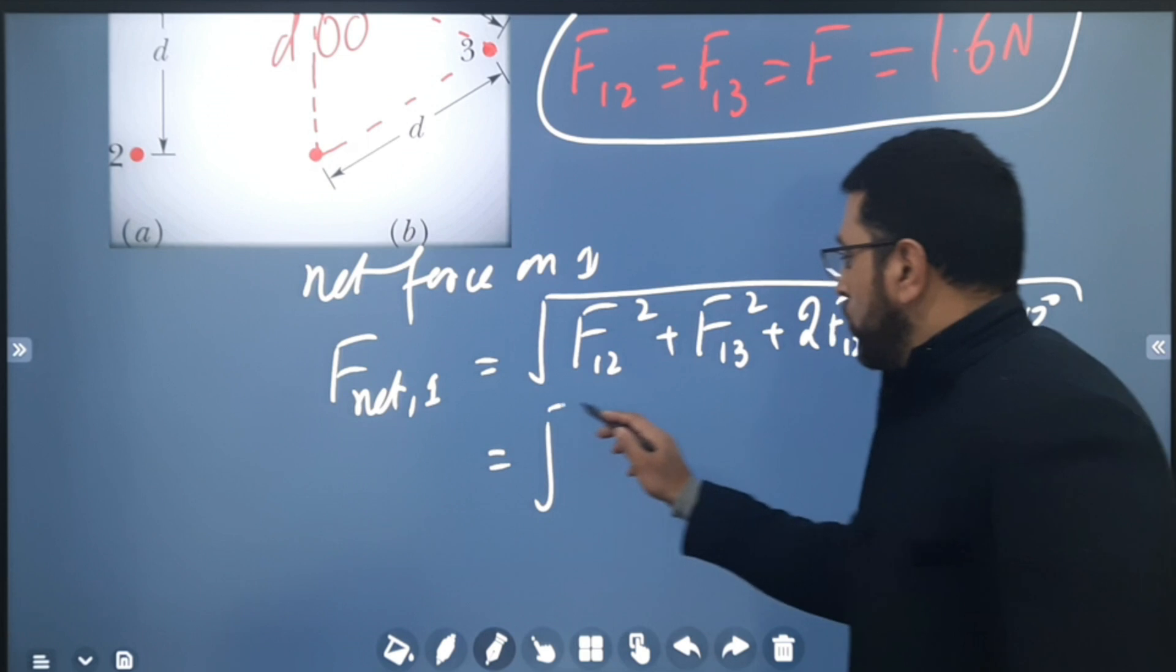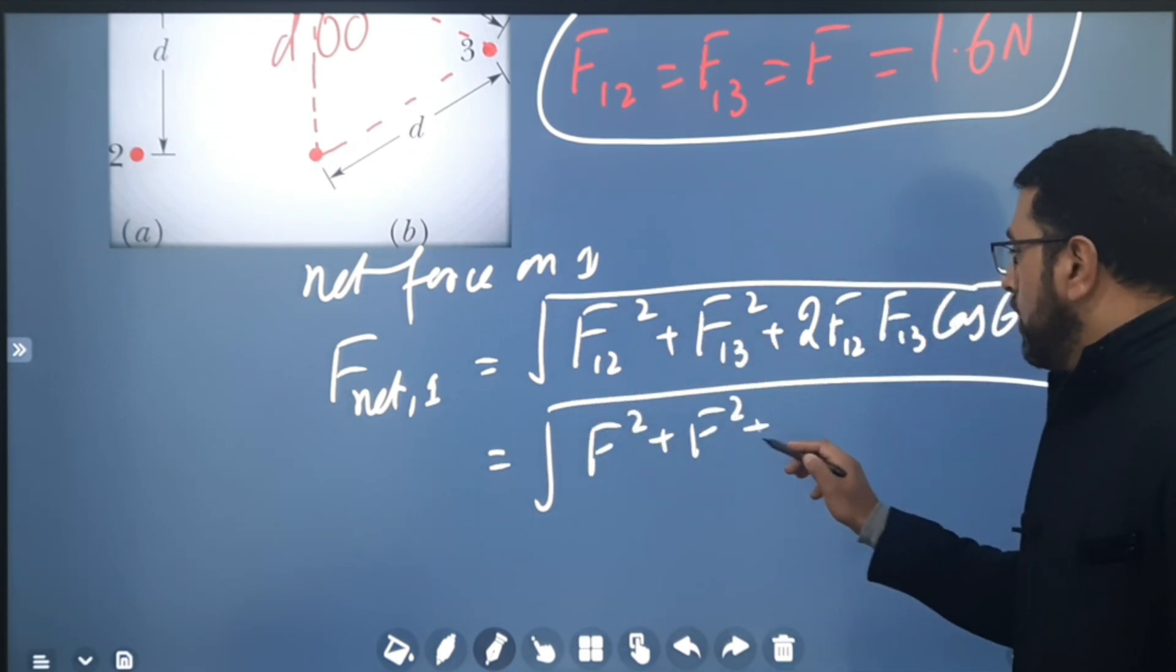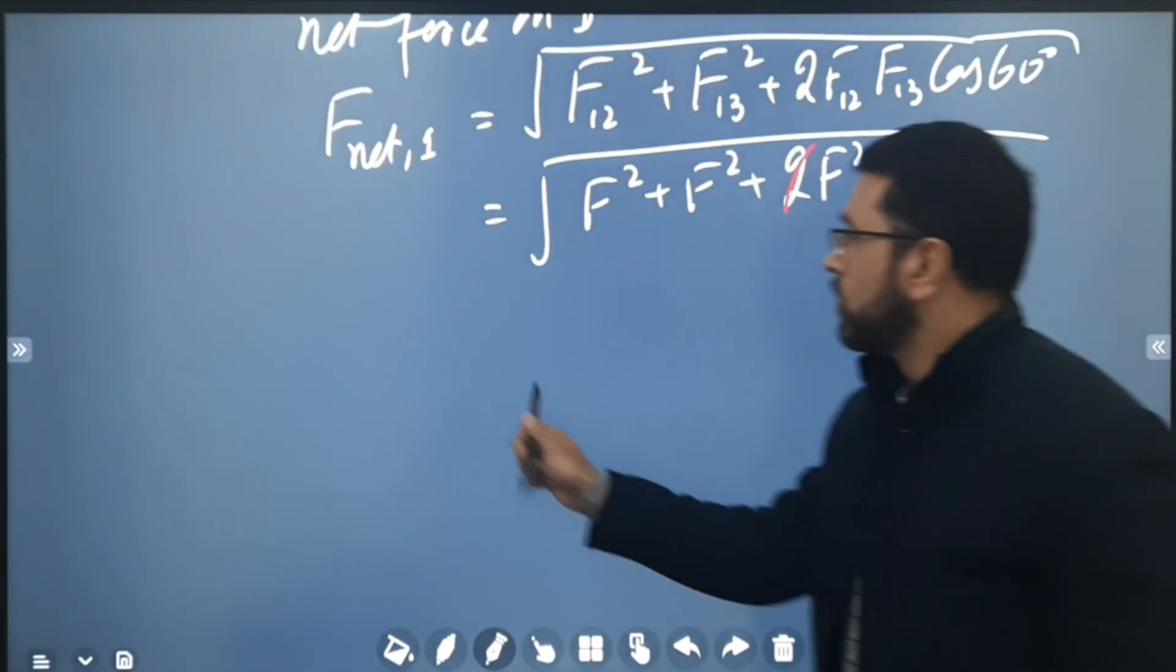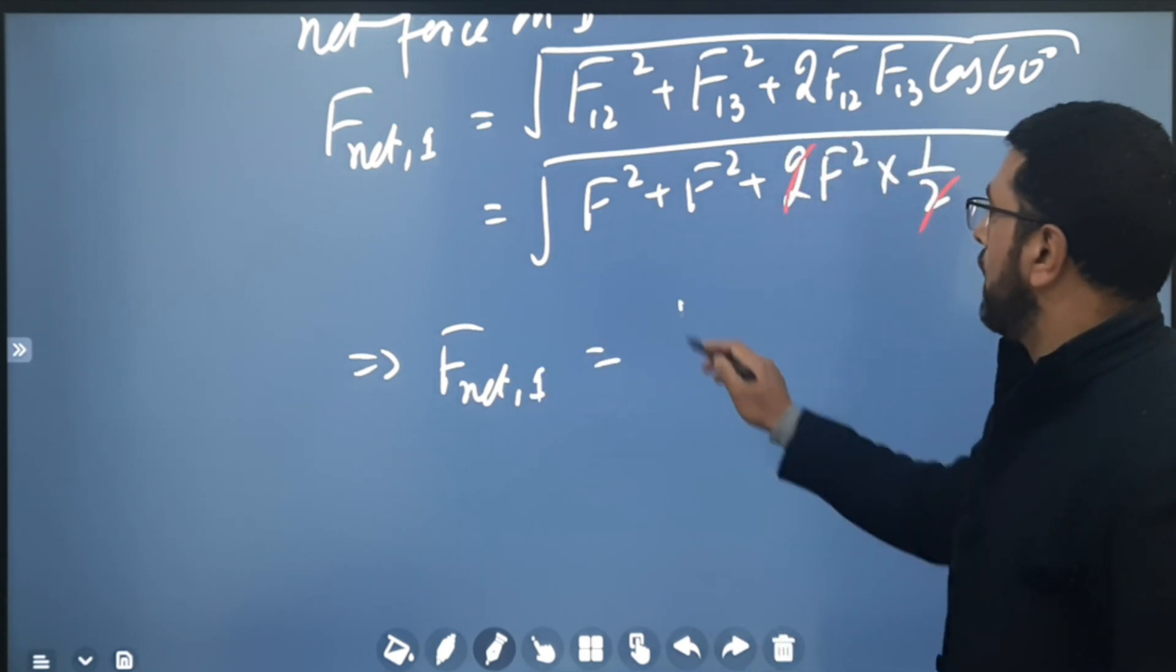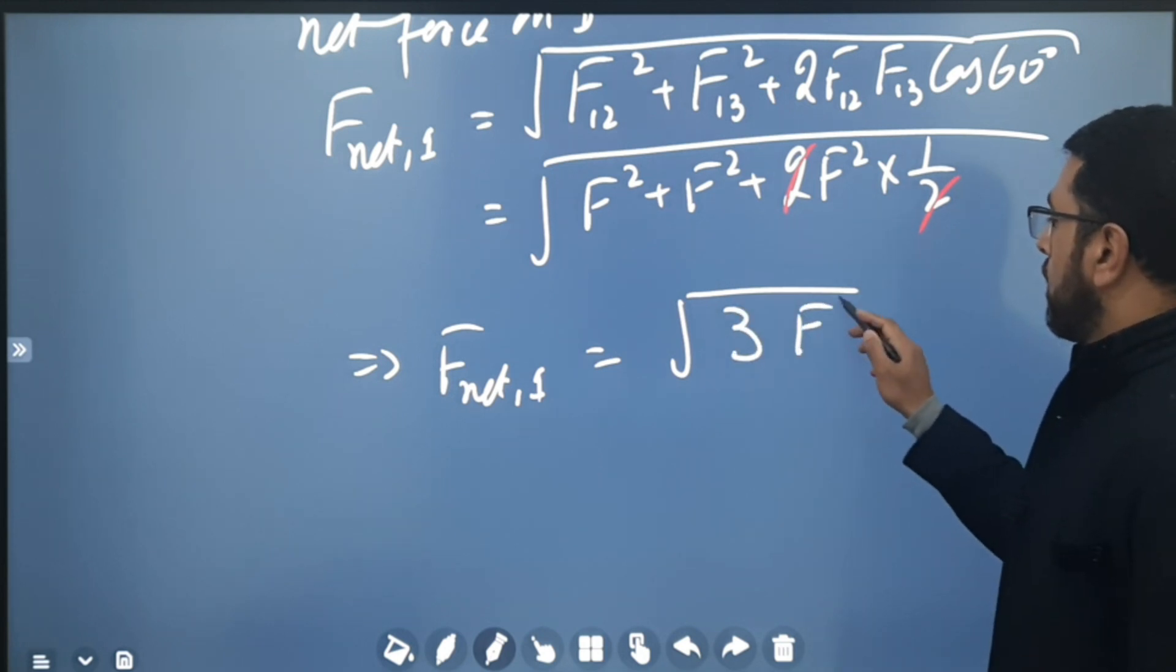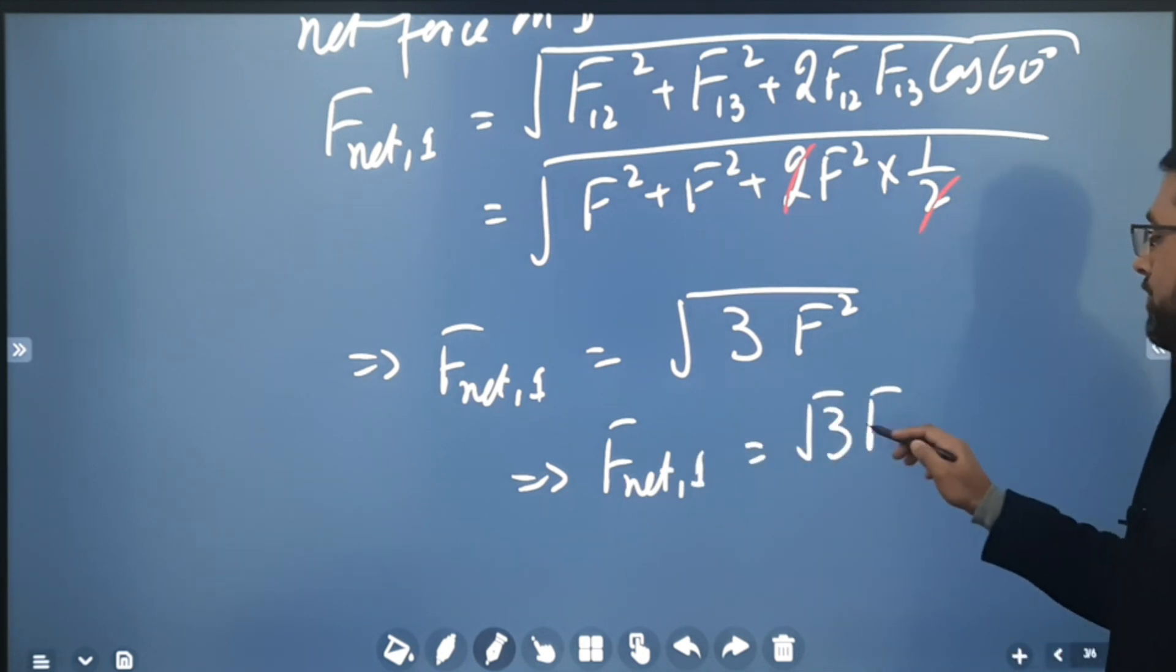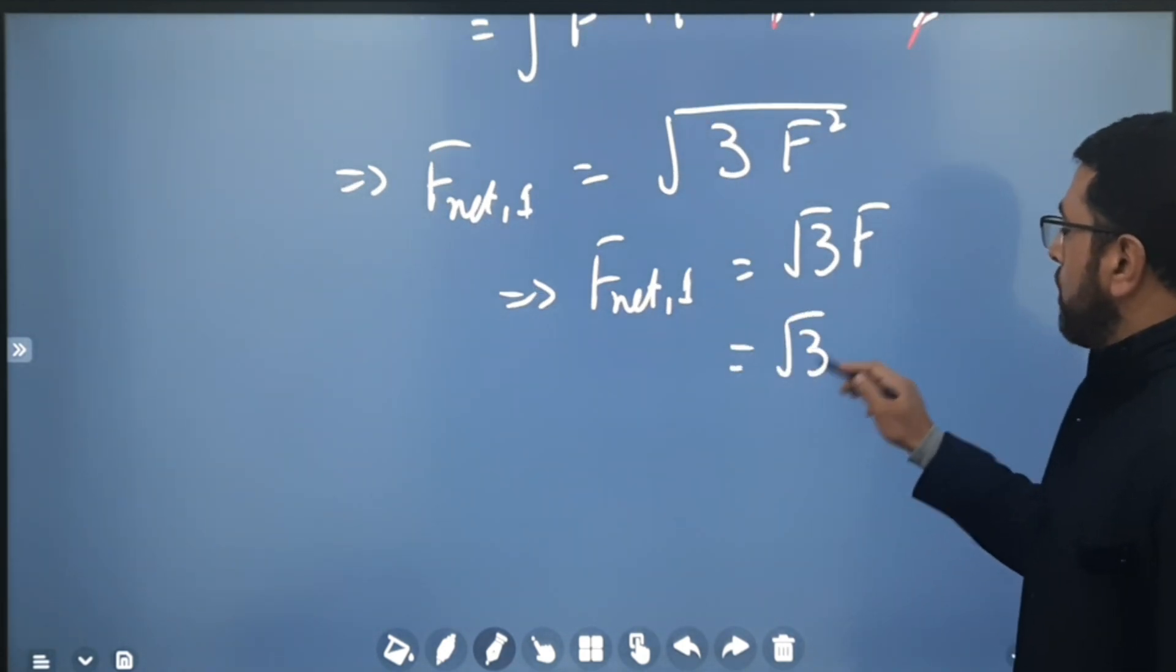This is equal to √(F² + F² + 2F·F·cos 60°). Cos of 60° is 1/2, so the 2 and 2 cancel out. We have net force on 1 equal to √(F² + F² + F²) = √(3F²). So this means the net force on 1 is equal to √3 F, and F we already know is 1.6 newtons.